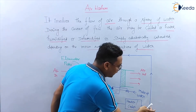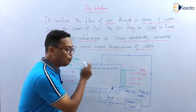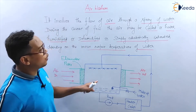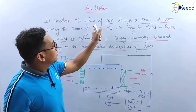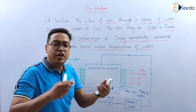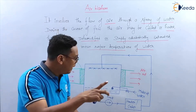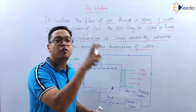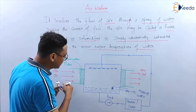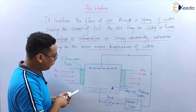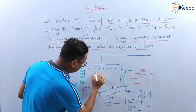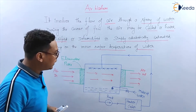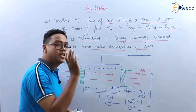Then this water will go to the air washer. In the air washer there is a spray. We are spraying water onto the air which is coming into the air washer. Air enters the air washer and we spray water on it from the sprayers.